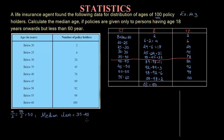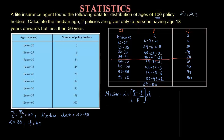The median class is 35 to 40. The formula for median is: Median = L + [(n/2 − Cf) / F] × H. L is the lower limit of the median class, which is 35. Cf is the cumulative frequency of the class preceding the median class — the number before 78 — which is 45. F is the frequency of the median class, which is 33.